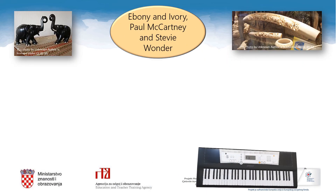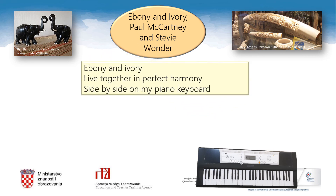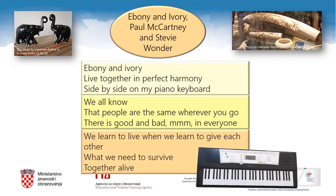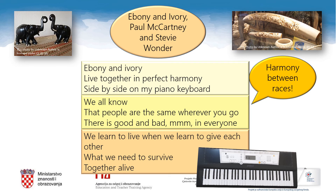'Ebony and Ivory' is a song about racial harmony using piano keys as a metaphor. The black keys on the piano are Ebony and the white ones are Ivory. The song asks why we all can't live together in perfect harmony like the keys. Do you have quotations that support your opinion? Please compare your quotations with your classmates and your teacher. I am sure you did well.